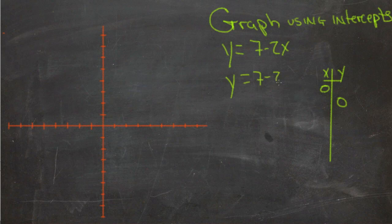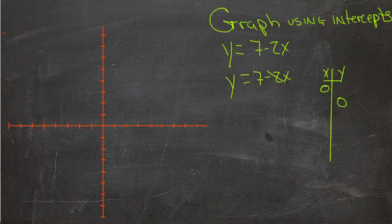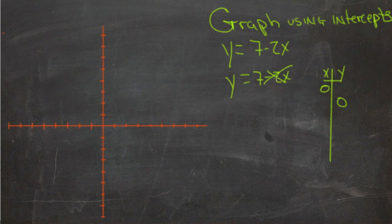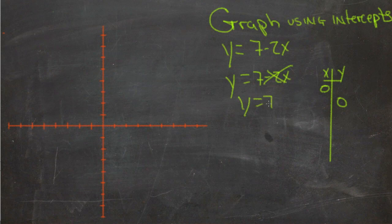When x is 0, we get y equals 7 minus 2 times 0. And again you'll see that that x term just goes away, because we have something multiplied by 0. So y equals 7.